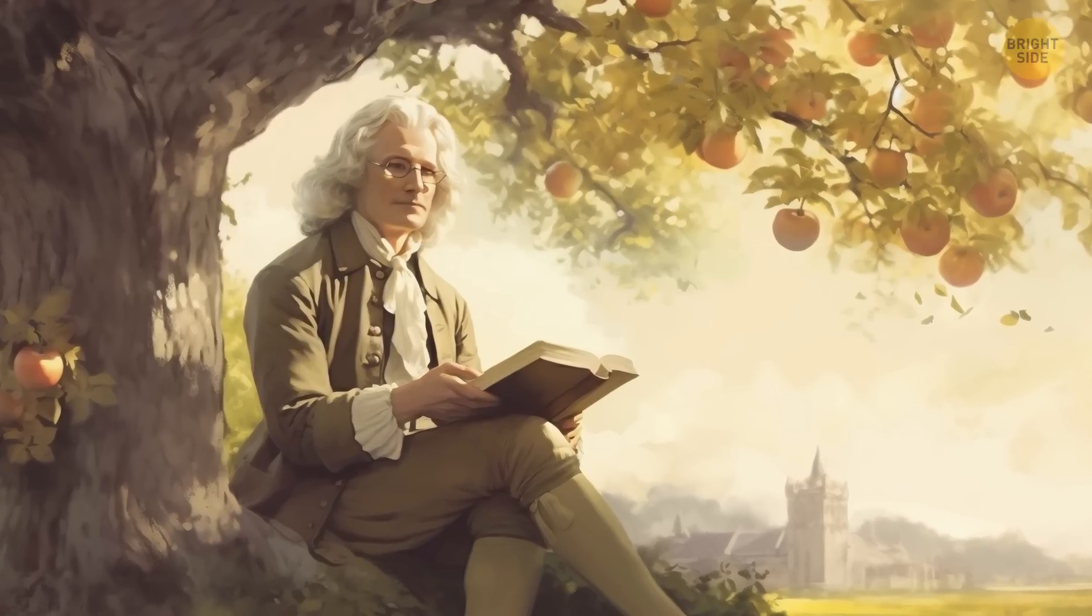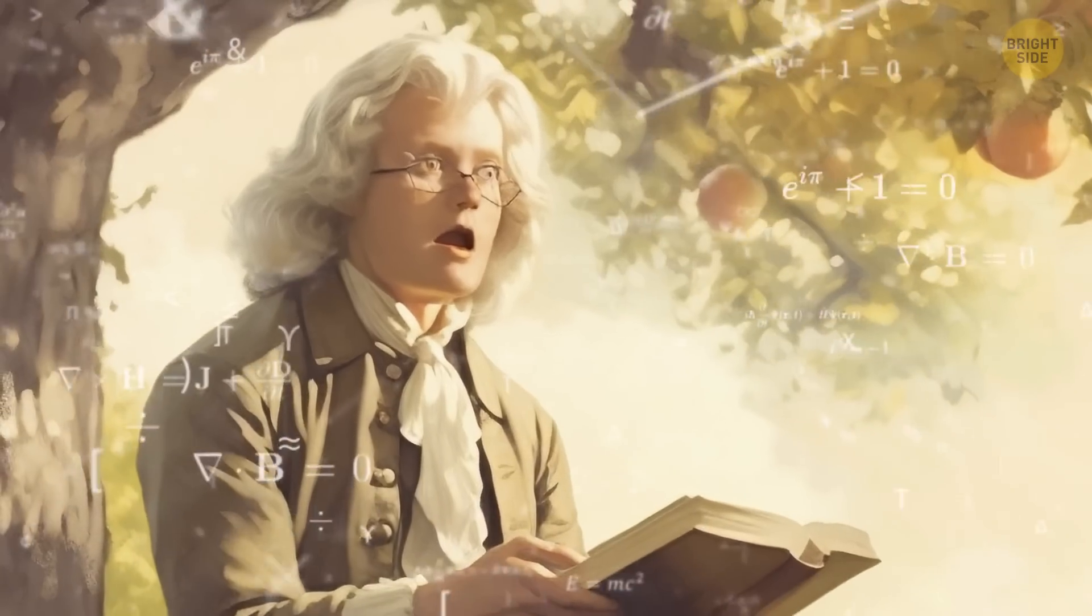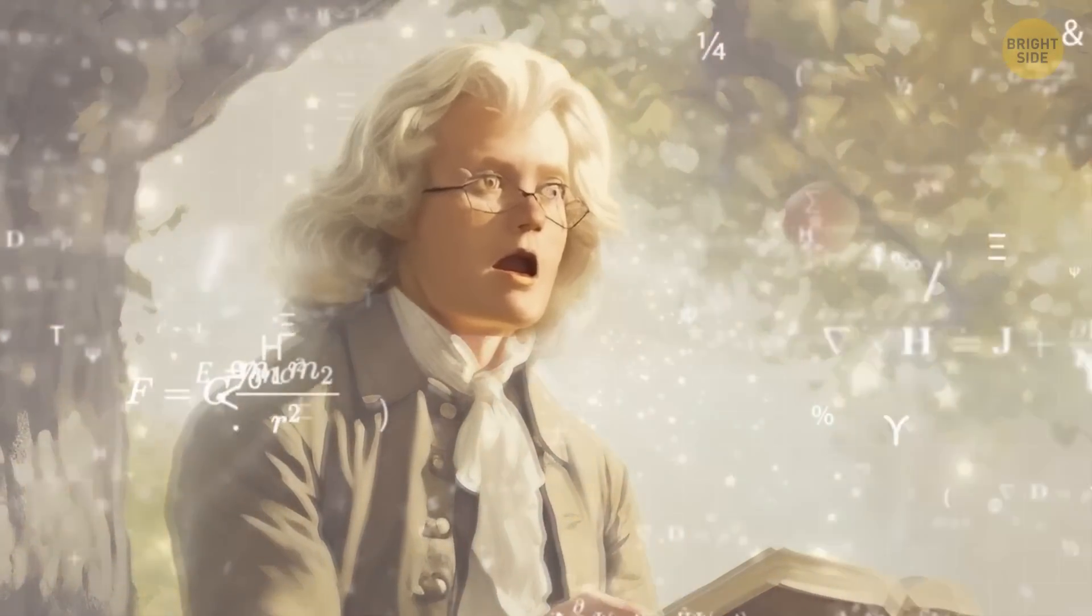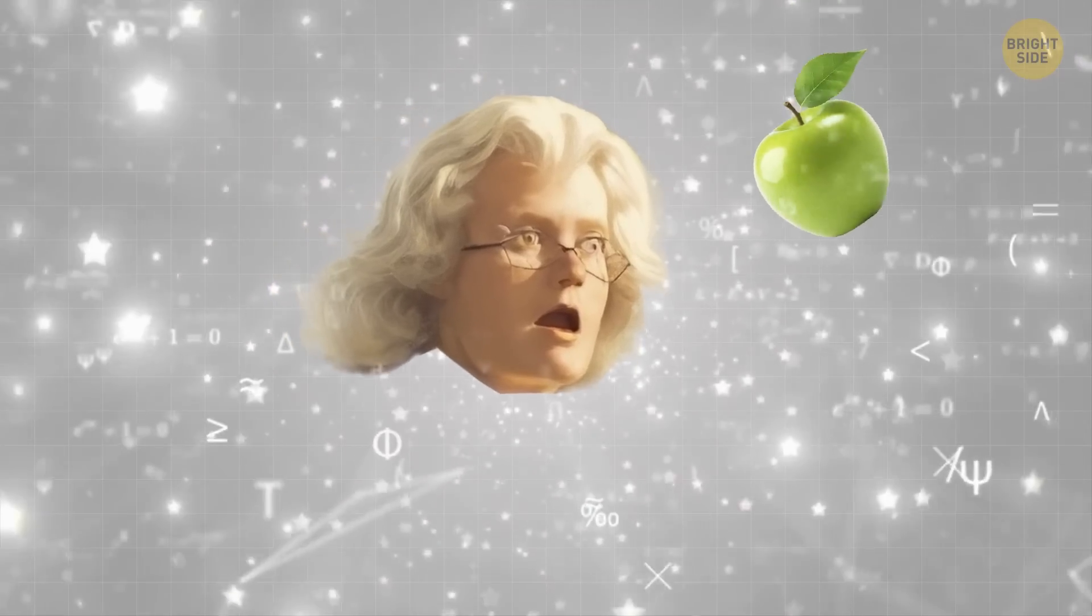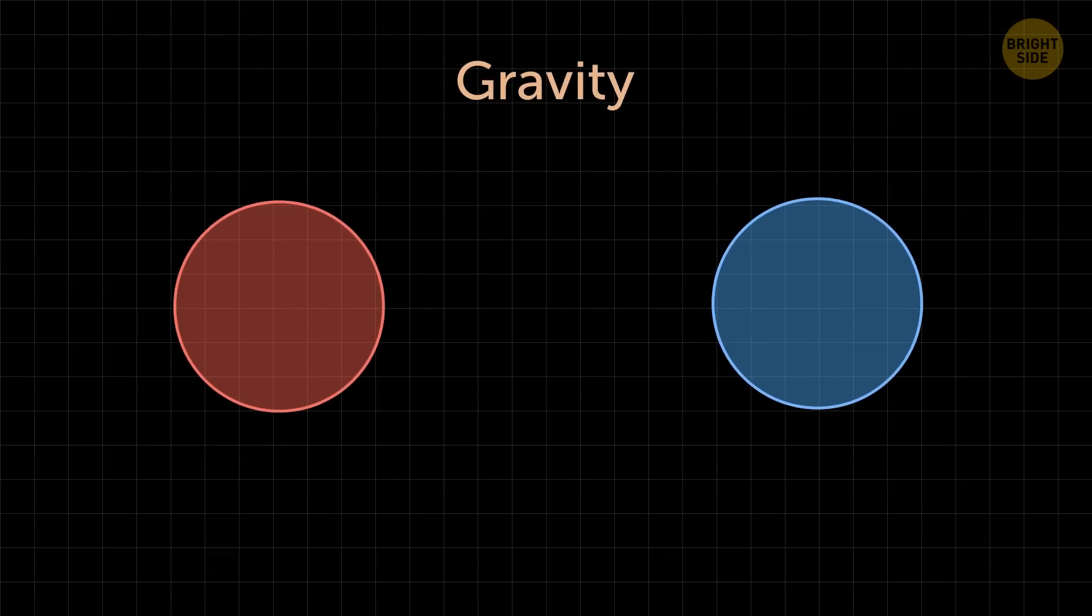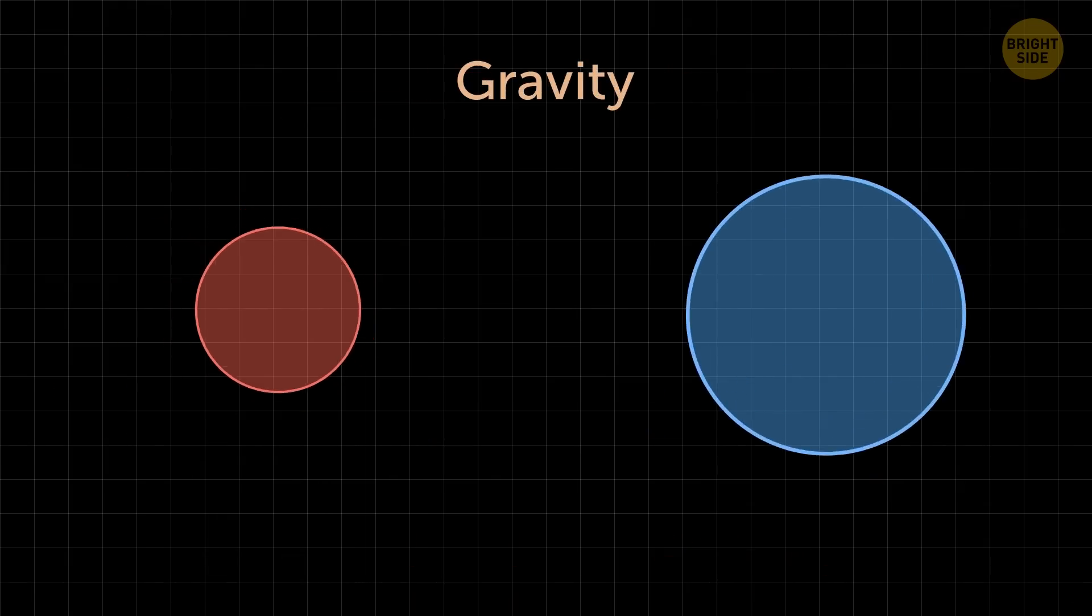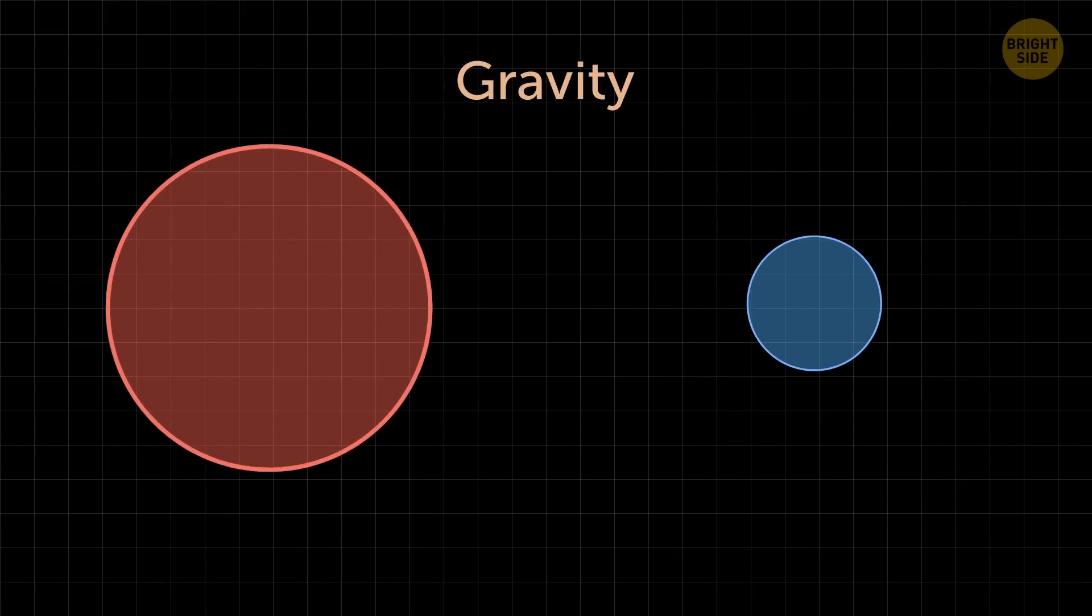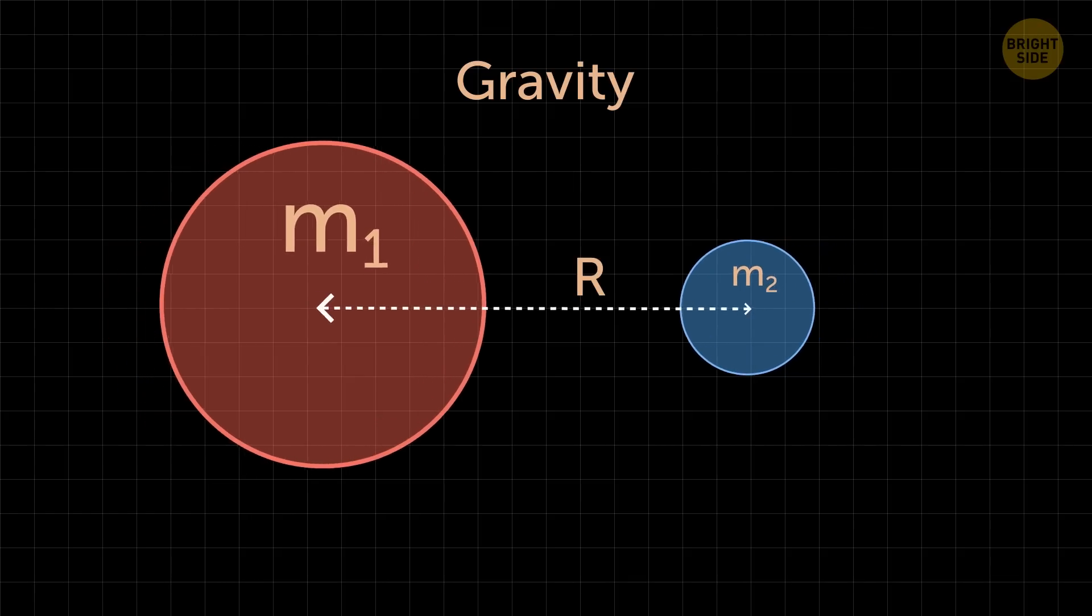We've learned a lot about gravity from the legendary Isaac Newton. He was the first to invent the law of gravitation. He taught us that any two objects in the universe can't help but be attracted to each other. It's like they have this secret gravitational crush going on. How strong this attraction is depends on two things: how big the objects are, that is their mass, and how close they are to each other.